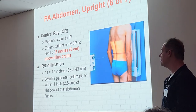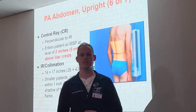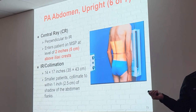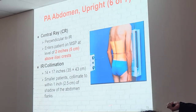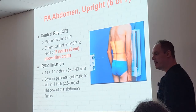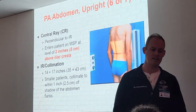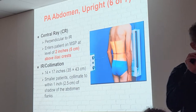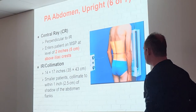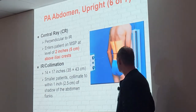Central ray for your PA upright: two inches above the crests. We're still using the 14x17 cassette — every abdominal x-ray in this chapter is 14x17. For smaller patients, collimate down slightly, but most patients will fill that 14x17 easily. Always show evidence of collimation when you can — it enhances your image and protects your patients. Perpendicular central ray.